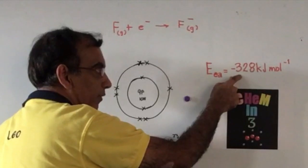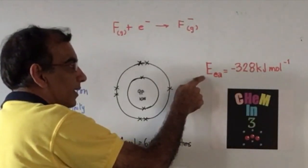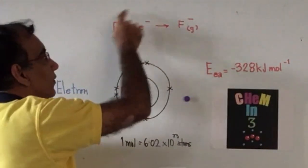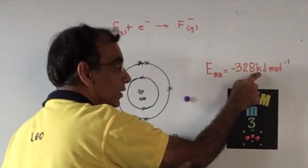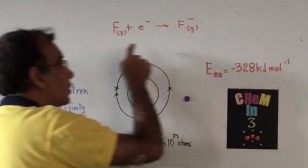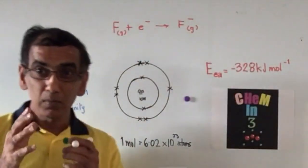So the units that we have for this electron affinity for fluorine would be -328 kilojoules per mole, because it all refers to one mole.